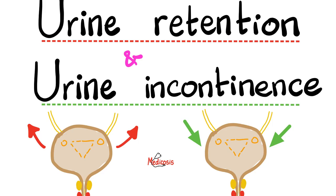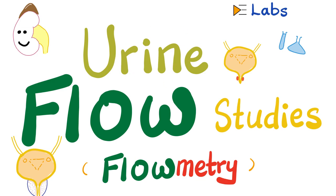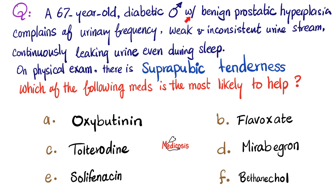For more detail, watch my video titled Urine Retention and Urine Incontinence in my urology playlist, and another video titled Urine Flowmetry or Urine Flow Studies. To summarize: if the bladder is too active as in urge incontinence, give a muscarinic antagonist or a beta-3 agonist. If the bladder is too weak, give a muscarinic receptor agonist. For benign prostatic hyperplasia, give an alpha-1 blocker or a 5-alpha reductase inhibitor. Here is a case: a 67-year-old diabetic male with BPH complains of urinary frequency, weak and inconsistent urine stream, and continuously leaking urine even during sleep. On physical exam there is suprapubic tenderness. Which medication is most likely to help? Pause and leave your answer in the comments.